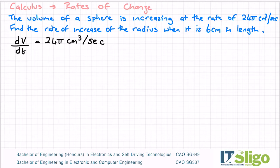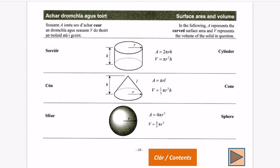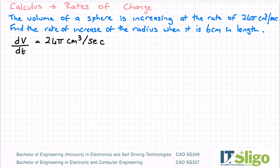It says the volume of a sphere, so let's have a look at the volume of a sphere. I'm going to take this from the log tables, page 10, which has surface area and volume of shapes. For a sphere, the volume is 4/3 πr³.